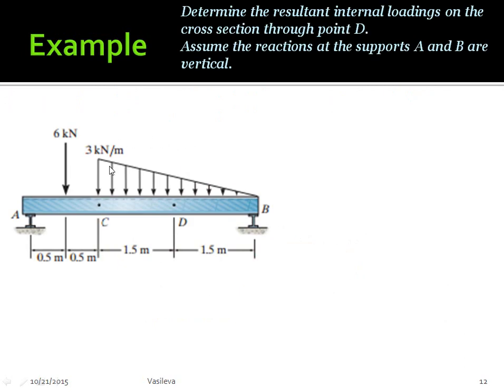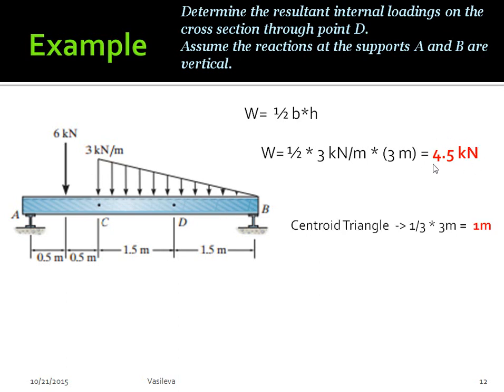Once again, we have to start off by finding what this distributed load is and where it's located. So W equals one-half base times height. I do one-half times three meters times three kilonewtons per meter, which gives me 4.5 kilonewtons.